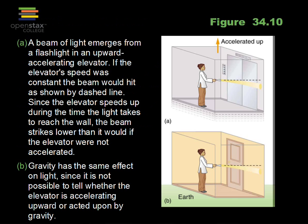Here we have a person in an elevator accelerating upward in the top frame, and the bottom one has the elevator at rest on Earth, accelerating at 9.8 meters per second squared upward — chosen because that is the acceleration due to gravity. The person has a flashlight or a laser. If the elevator's speed were constant, the beam would go straight across horizontally; at constant velocity we cannot do an experiment that will tell us if we are moving or not.